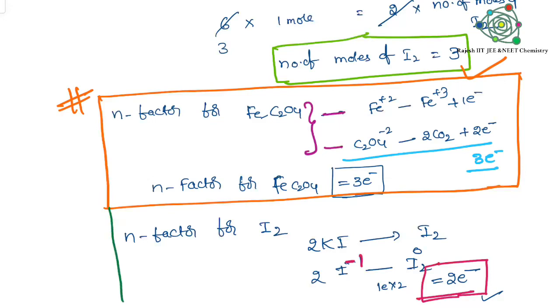Whereas coming to the n-factor for I2: iodide is converted into I2, that means -1 is converted into 0. That means 1 electron lost. But 2 iodines are there. Therefore 2 times 1 electron equals 2 electrons. Therefore n-factor for I2 is equal to 2.